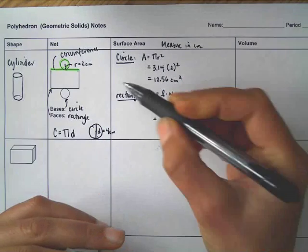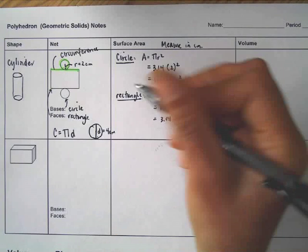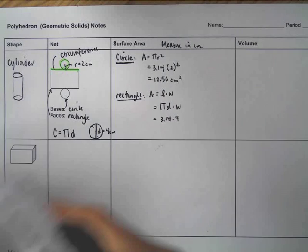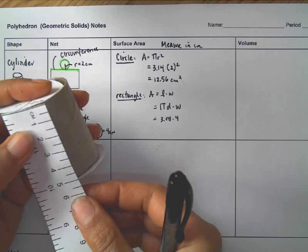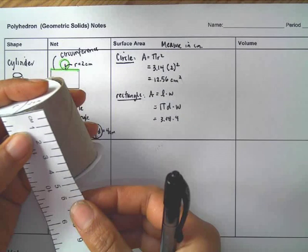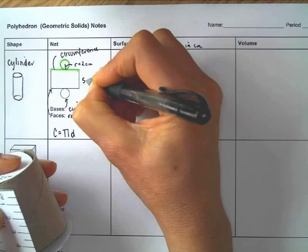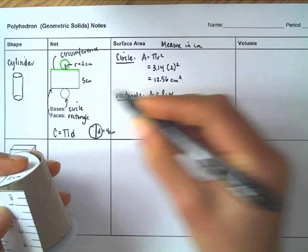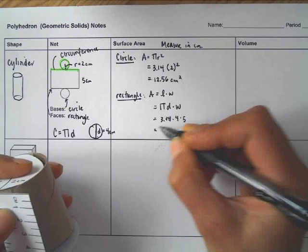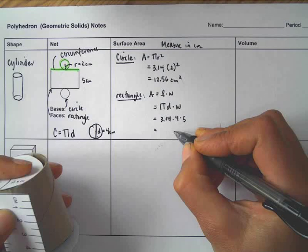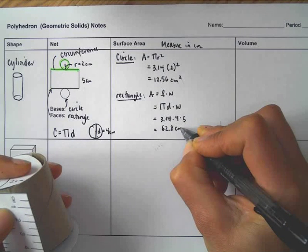Then I'm going to take my trusty ruler and I'm going to measure everything in centimeters. So this is 5 centimeters tall, the height of this, and I can actually put this on here, the height equals 5 centimeters. Then I'm going to multiply that all out and I get 62.8 centimeters squared.